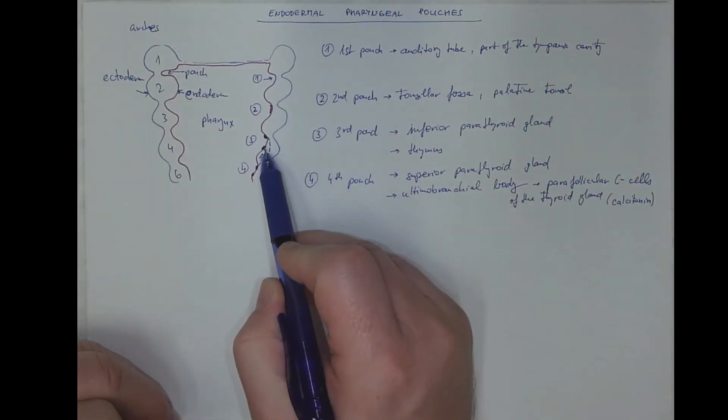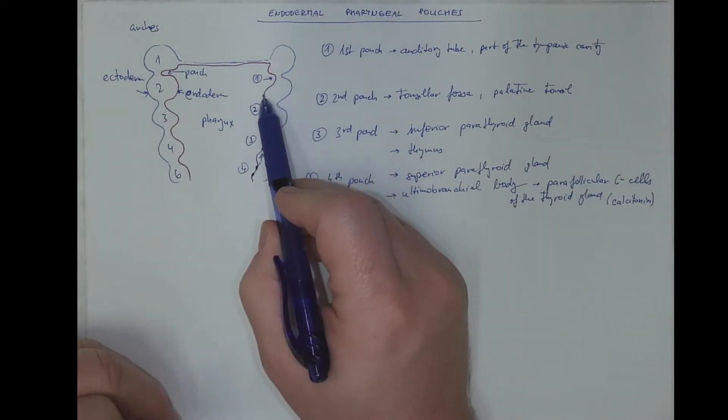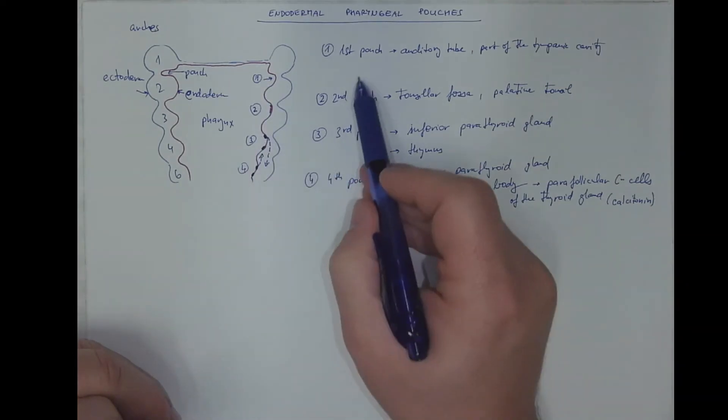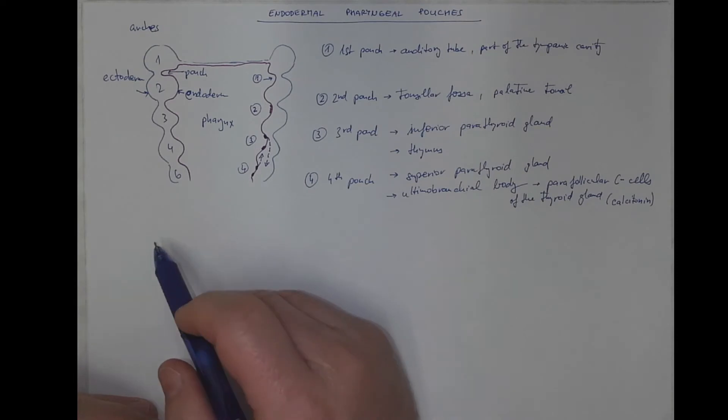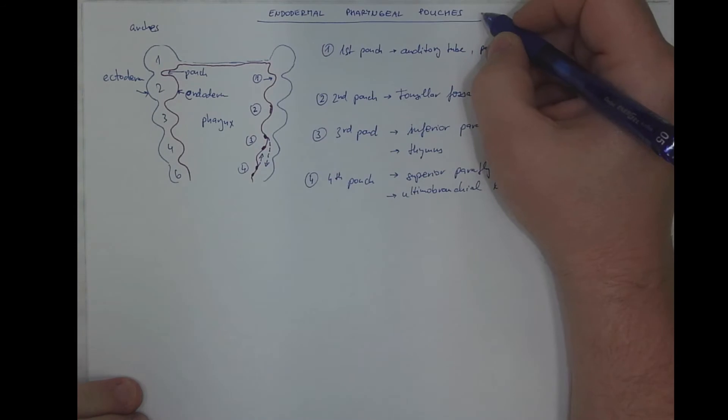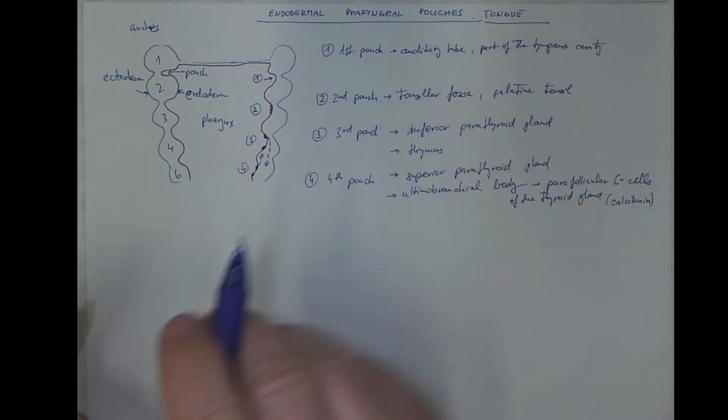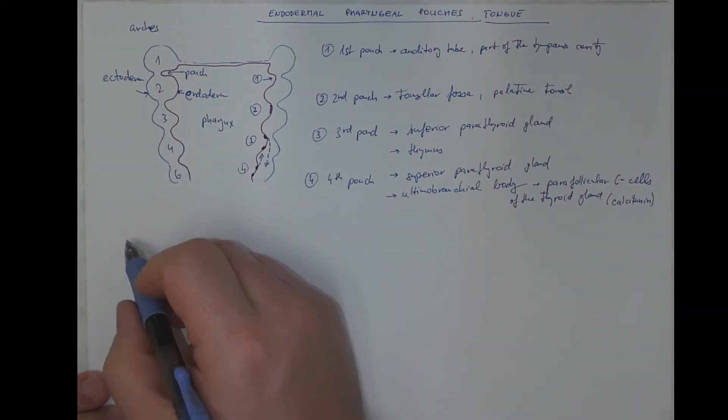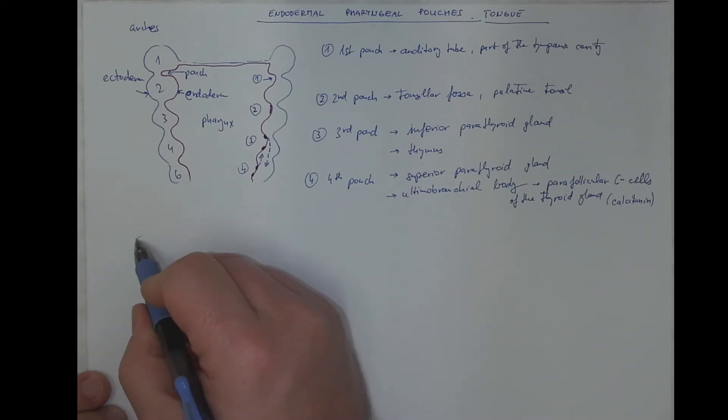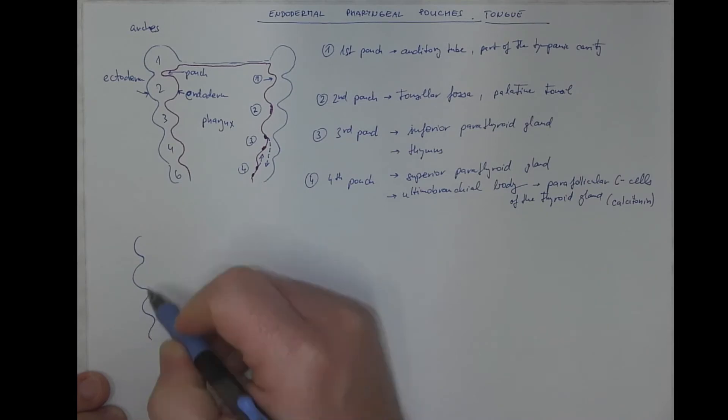We definitely understand that we need to map the fate of the pharyngeal pouches to explain the embryonic origin of all these organs. The next organ we will discuss will be the development of the tongue. And let's explain, let's draw this region again, the pharyngeal region in the frontal section, first, second, third, fourth, arch.